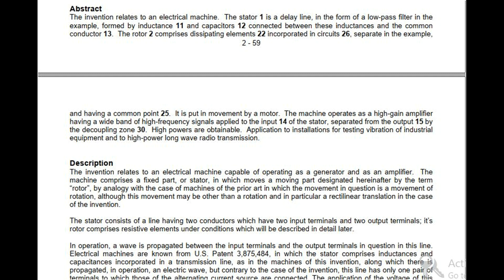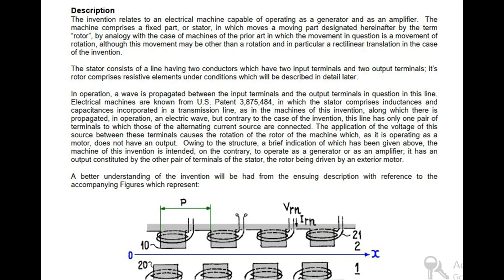The stator consists of a line having two conductors which have two input terminals and two output terminals. Its rotor comprises resistive elements under conditions which will be described in detail later. In operation, a wave is propagated between the input terminals and the output terminals in question in this line. Electrical machines are known from U.S. Patent 3,875,484, in which the stator comprises inductances and capacitances incorporated in a transmission line, as in the machines of this invention, along which there is propagated, in operation, an electric wave. But contrary to the case of the invention, this line has only one pair of terminals to which those of the alternating current source are connected. The application of the voltage of this source between these terminals causes the rotation of the rotor of the machine which, as it is operating as a motor, does not have an output.